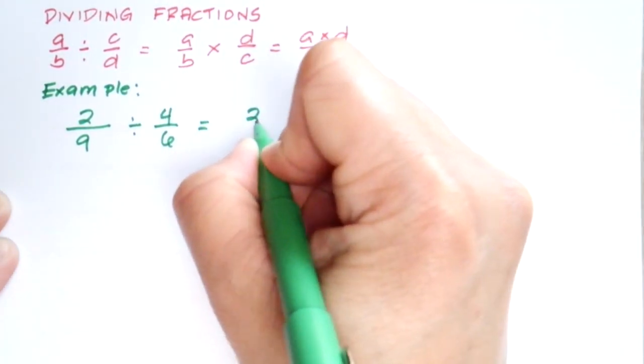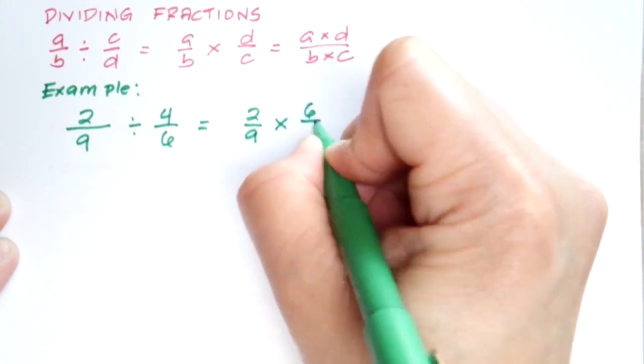For example, if we have 2 over 9 divided by 4 over 6, we're going to copy 2 over 9 and multiply it with the reciprocal of the second fraction which is 6 over 4.